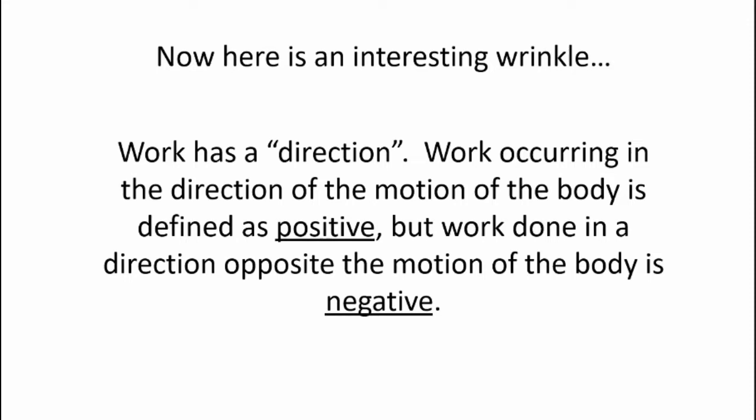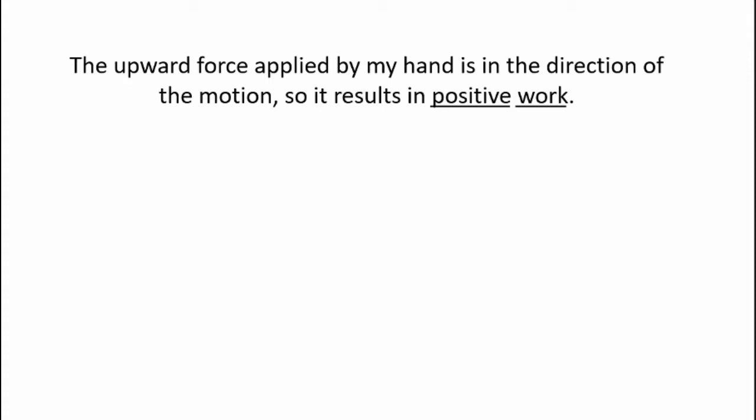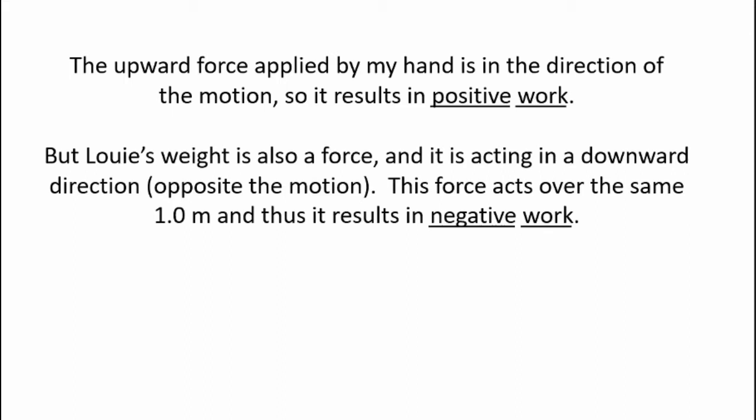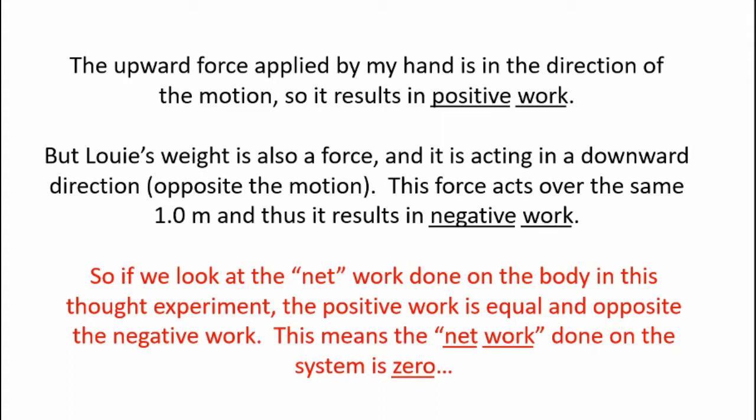Now here's an interesting wrinkle. Work has a direction. And work occurring in the direction of the motion of the body is defined as positive. But work done in a direction opposite the motion of the body is determined to be negative. The upward force applied by my hand is in the direction of motion. So it results in positive work. But Louis's weight is also a force and it's acting in a downward direction or opposite the motion. This force acts over the same 1.0 meters and thus results in a negative work. So if we look at the network done on the body in this experiment, the positive work is equal and opposite the negative work. This means the network done on the system is zero.